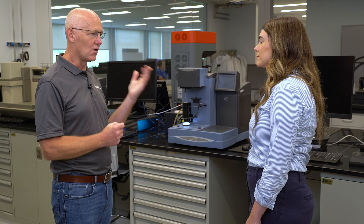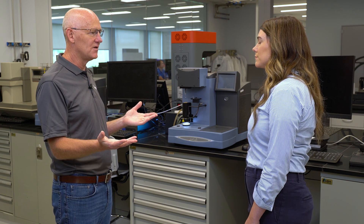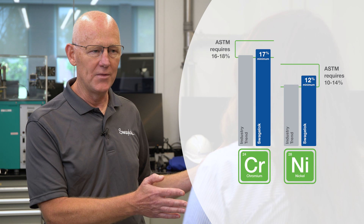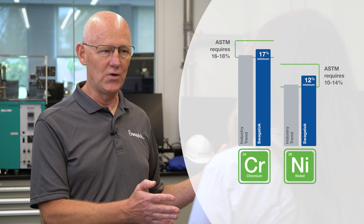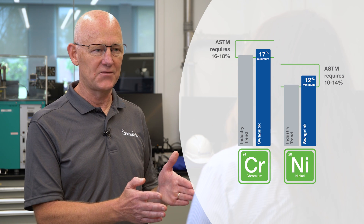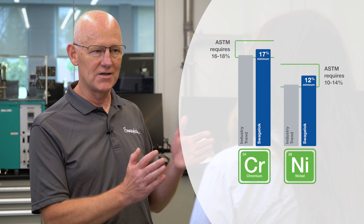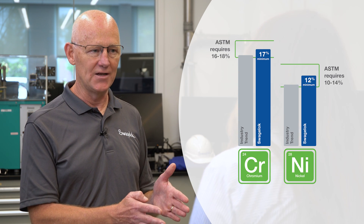For both localized corrosion and chloride stress corrosion cracking, Swagelok specifies our material to have enhanced chemistry. The ASTM standard requirement for chrome is 16 to 18 weight percent; Swagelok specifies a minimum of 17. The ASTM standard for nickel is 10 to 14; Swagelok specifies a minimum of 12 percent. We also offer a range of other alloys with higher chrome, molybdenum, nitrogen, and nickel. All of these things enhance corrosion resistance.